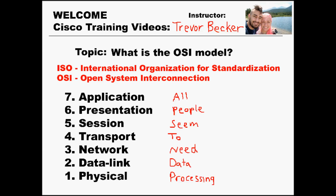The OSI model is a seven-layered network model. At the top you have the application layer, working your way down: presentation, session, transport, network, data link, and physical. An easy way to remember this is the mnemonic: 'All People Seem To Need Data Processing.' The first letter of each word correlates to the first letter of each layer — A for application, and so on, all the way down to physical and processing.